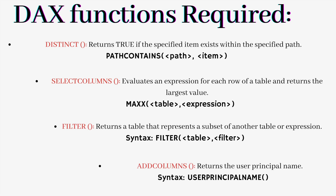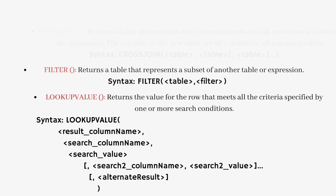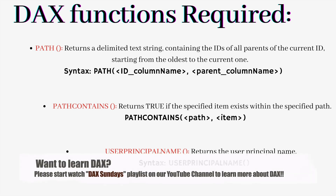Let's first have a look at the DAX functions we are going to use in this video. First is the DISTINCT function, then SELECTCOLUMNS, FILTER, and ADDCOLUMNS. We will also cover CROSSJOIN, which returns a table containing the Cartesian product of all rows from all the tables in the argument. Then we'll use FILTER, LOOKUPVALUE DAX function, and also PATHITEM, PATH, PATHCONTAINS, and USERPRINCIPALNAME — all of which we have already discussed in our previous videos. We have a separate playlist on our YouTube channel called DAX Sundays where I have covered all the DAX functions.